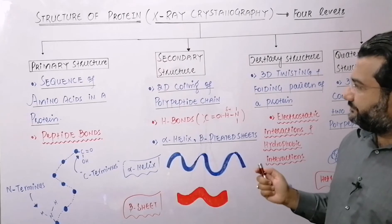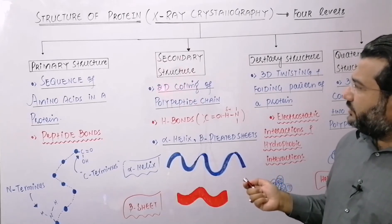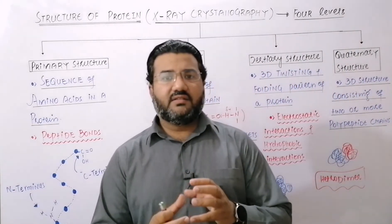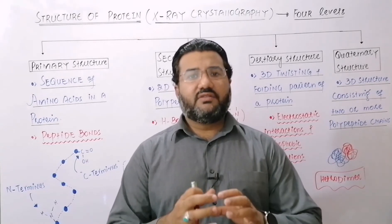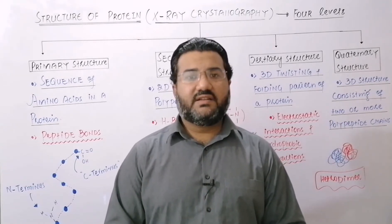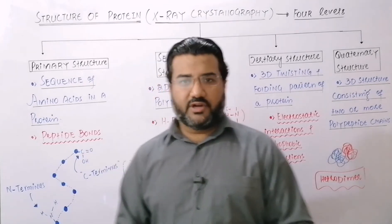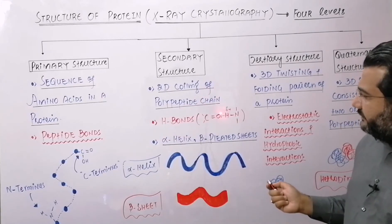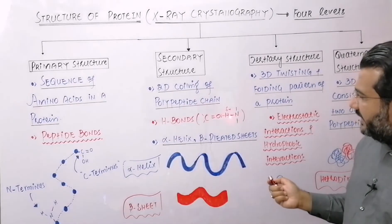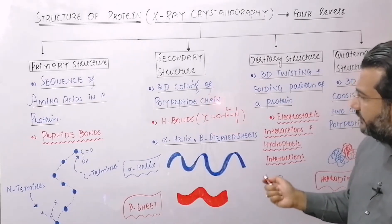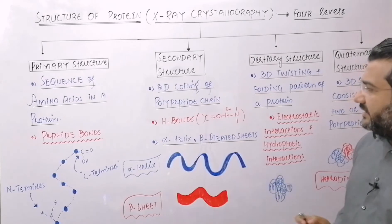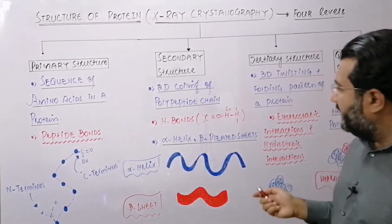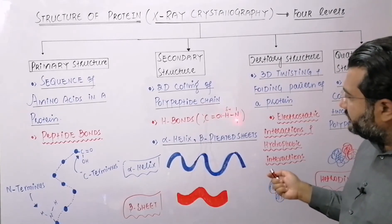What is secondary structure? Secondary structure results when two-dimensional coiling of the polypeptide chain takes place. Polypeptide chains coil in a two-dimensional way or they form sheets, and that structure is called the secondary structure. The very important point is that secondary structure is maintained by hydrogen bonds. Hydrogen bonds are present between the oxygen of the carbonyl group and hydrogen of the amine group — keep this in mind for MCQ-type questions.